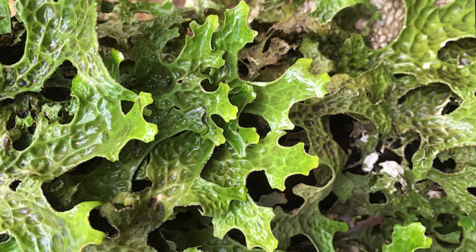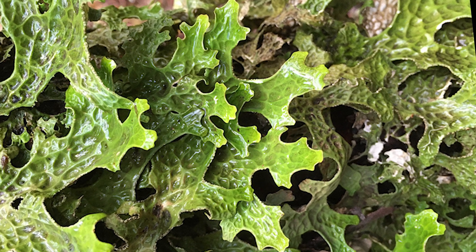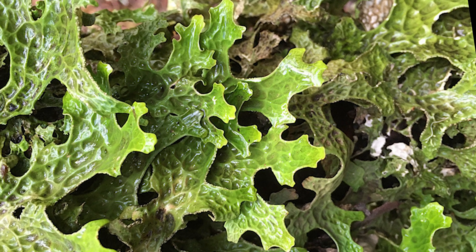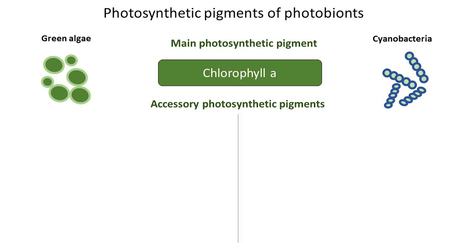This green coloration is most prominent when the lichen is actively photosynthesizing and growing. In addition to the main chlorophyll A, photobionts may have accessory pigments. Similar to antennae, these pigments capture light wavelengths in a broader spectrum than chlorophyll A, retranslating this energy to chlorophyll A and making photosynthesis more efficient.